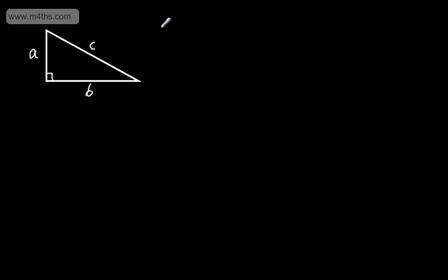Let's start off with a right-angled triangle. We have one shorter side here, another shorter side here, and then we have the longer side which is called the hypotenuse. I'm going to label these up. One of the shorter sides will be A, the other shorter side will be B, and the hypotenuse will be C. The hypotenuse, which is the longer side, is always opposite the right angle.